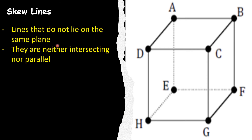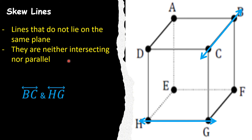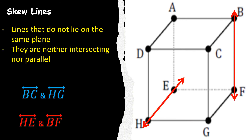Skew lines are lines that do not lie on the same plane — they are neither intersecting nor parallel. They are not on the same plane and they never intersect. Example: Line BC and Line HG — they are not parallel and they do not intersect. Another example: Line HE and Line BF.